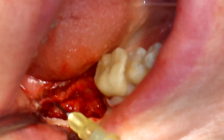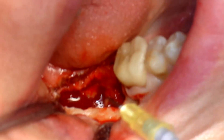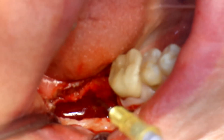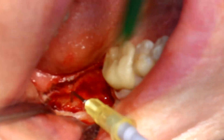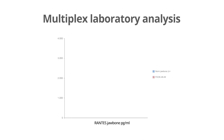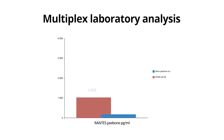The treatment of the wound with PRGF storage and primary suture closure is not shown here. This is followed by a laboratory analysis of the FDOJ sample for local RANTES expression, which confirms the chronic inflammation at 4-8 with 1,025 pg/ml — an approximately 8-fold overexpression of RANTES compared to healthy jaw bones. Areas 4-8 and 4-9 showed a massive chronic FDOJ inflammatory focus.